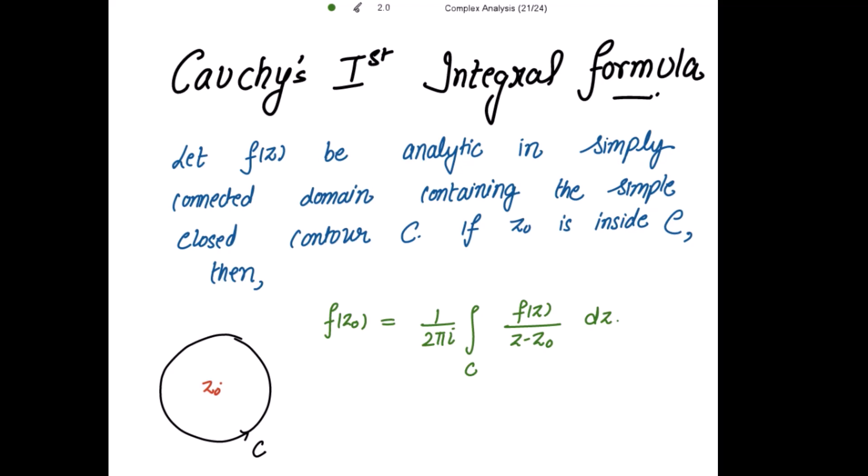Here f(z) is analytic. Analytic means that the function is continuous everywhere in its domain. And if it is continuous everywhere in its domain, then it is also continuous at the point z0. So f(z) is analytic in a simply connected domain — that is, a path-connected domain where one can continuously shrink any simple closed curve into a point.